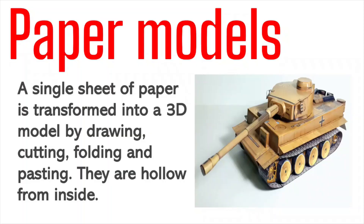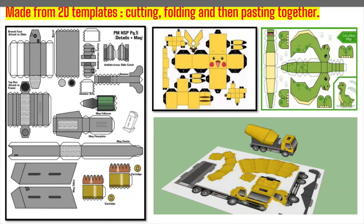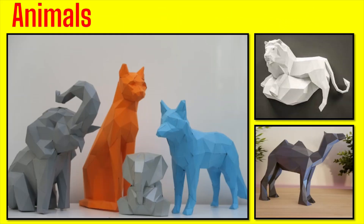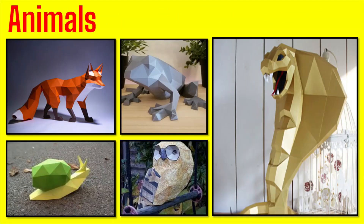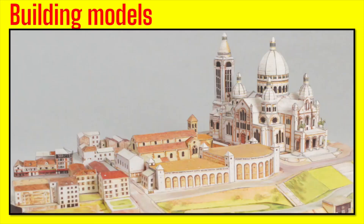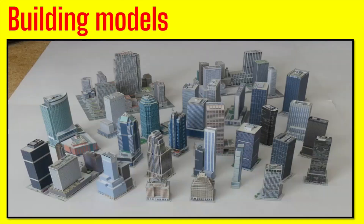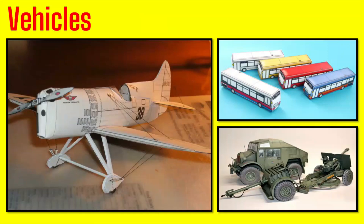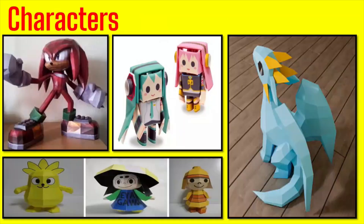Paper models are made using a single sheet of paper formed into a 3D model by cutting, folding, and pasting. These paper models are hollow from inside and are made from 2D paper templates by cutting, folding, and pasting together. You can see some samples including animals, building models, vehicles, and cartoon characters.